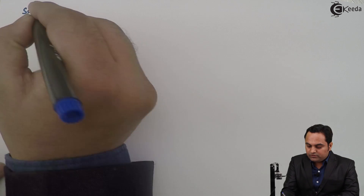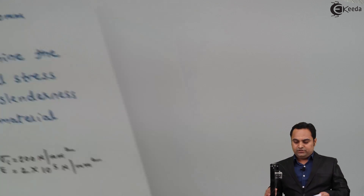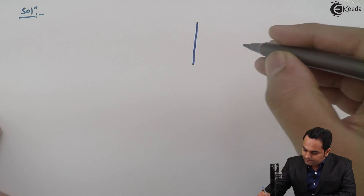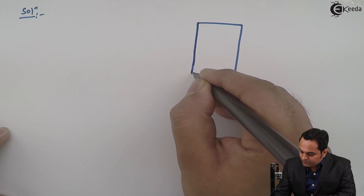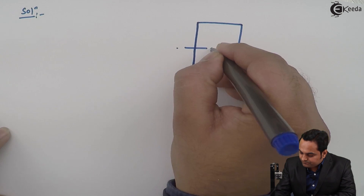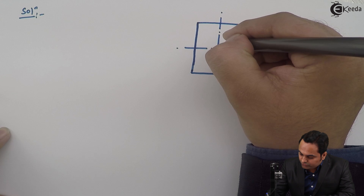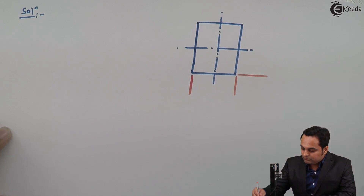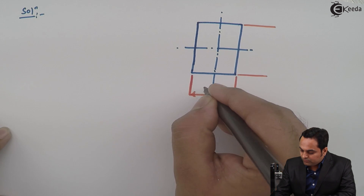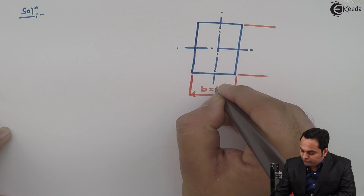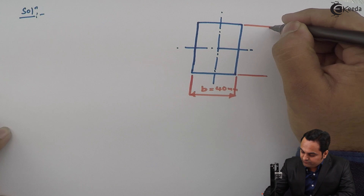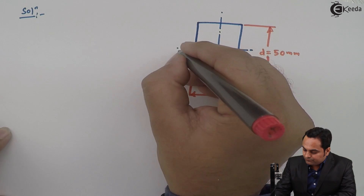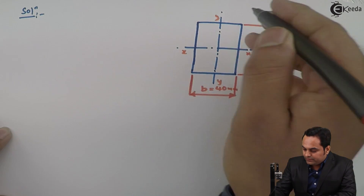Since it is a rectangular section 40mm into 50mm, I will draw the section. This rectangle will have width equal to 40mm and depth equal to 50mm. These are the x and y axes respectively.